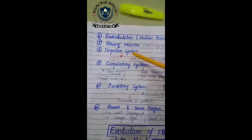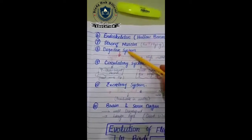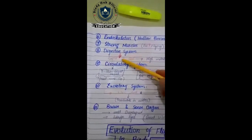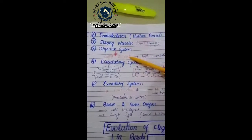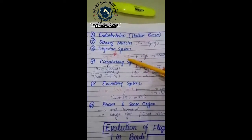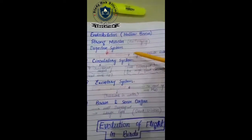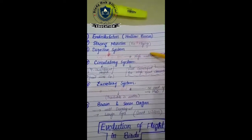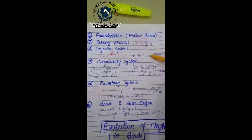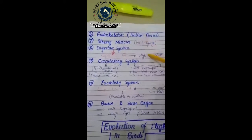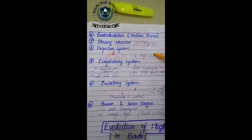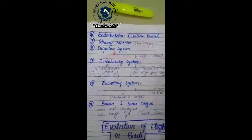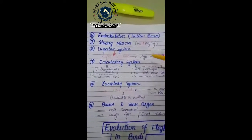The next character is digestive system. Their digestive system is rapid and fast — very quick compared to other organisms. Their metabolic rate is very high. The logic behind this is again the same: they have to fly and they need a lot of energy, so their metabolic rate is very high.